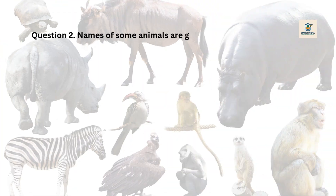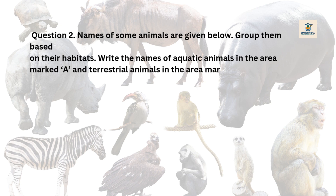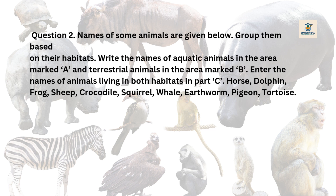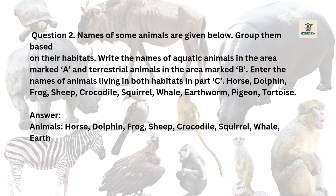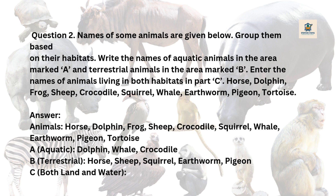Question 2: Group the following animals based on their habitats. Write aquatic animals in area A, terrestrial animals in area B, and animals living in both habitats in part C. Animals: horse, dolphin, frog, sheep, crocodile, squirrel, whale, earthworm, pigeon, tortoise. Answer — A (Aquatic): dolphin, whale, crocodile. B (Terrestrial): horse, sheep, squirrel, earthworm, pigeon. C (Both land and water): frog, tortoise.